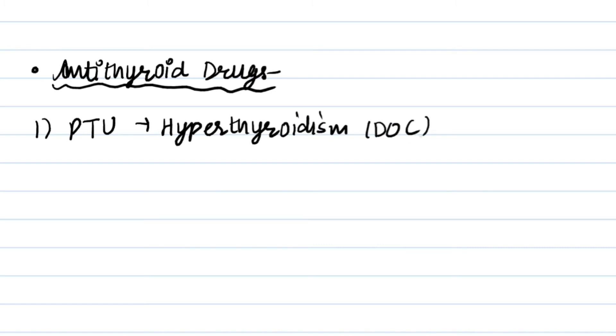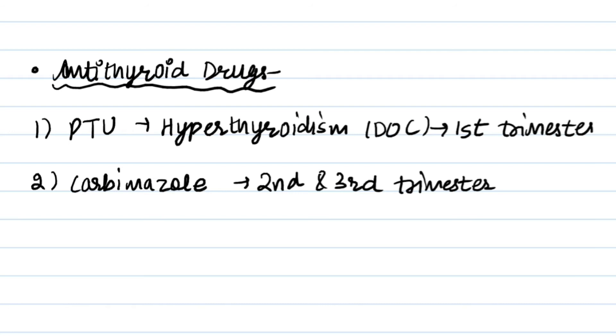And the second one is carbimazole. It is drug of choice for second and third trimester. PTU was for first trimester and carbimazole is for second and third trimester. If trimester is not mentioned, then choose PTU as the answer.